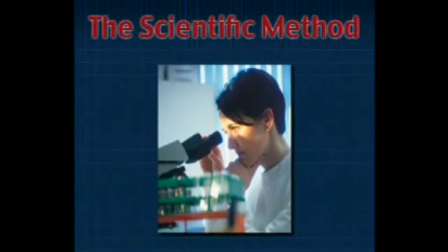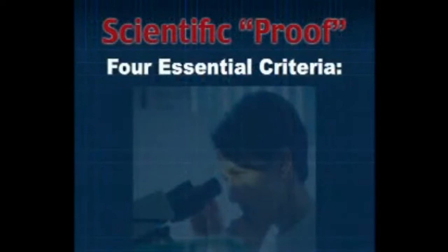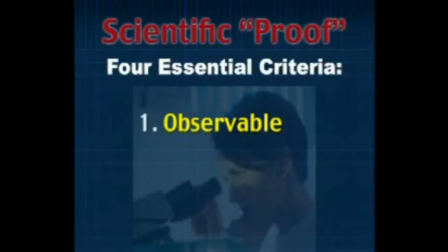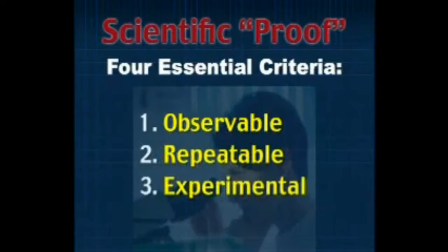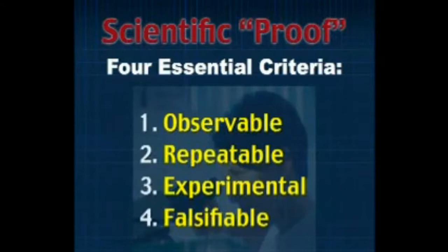When we are talking about absolute scientific proof, we are talking about at least four criteria. First, that it is an observable phenomenon — if we cannot observe it, there is no way to prove it scientifically. It has got to be repeatable so that you see it and somebody else can see the same thing. It should be experimental so that you can perform tests to see if it is verified or falsified. And it must be at least potentially falsifiable — it must be some kind of a test so that if this happens, it is not so. If you cannot come up with a test like that, it is not testable or falsifiable.